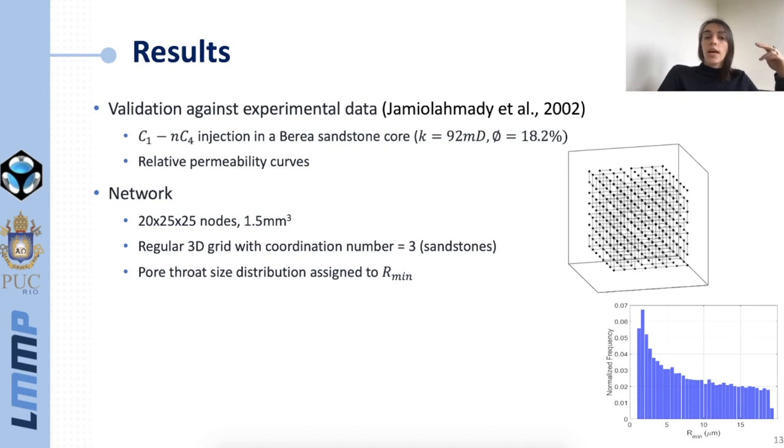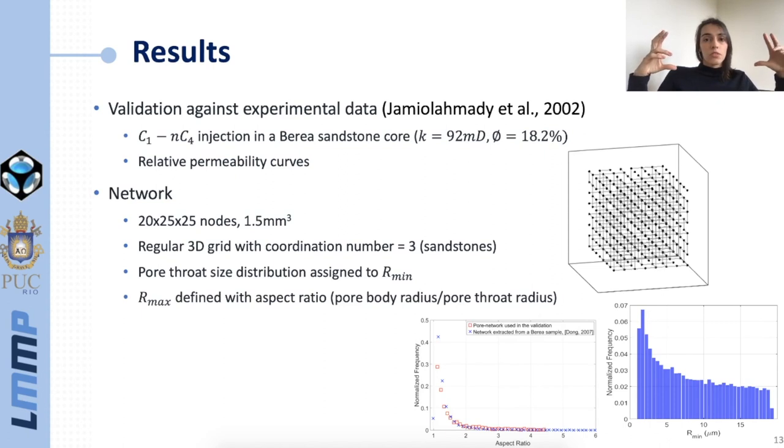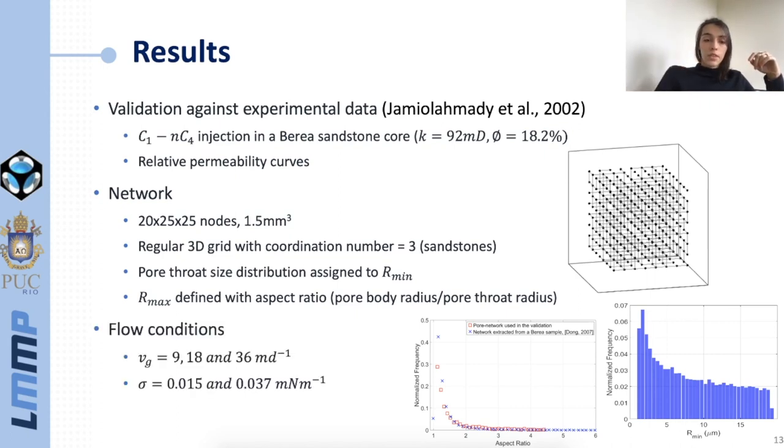Also for this network I had the pore throat size distribution of this exact core and I assigned this distribution to the constriction radius of the capillaries. To define the maximum radius of the capillaries I didn't have any specific data from this core so I used the aspect ratio of a different Berea sample. The aspect ratio is the ratio between pore body and pore throat radii. Finally the flowing conditions that I reproduced were obtained with three different gas flowing velocities of 9, 18, and 36 meters per day and two different values of interfacial tension, 1.5 and 3.7 millinewtons per meter.